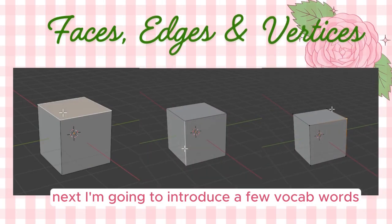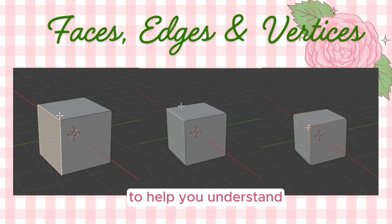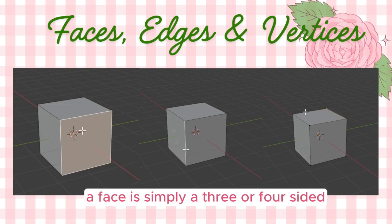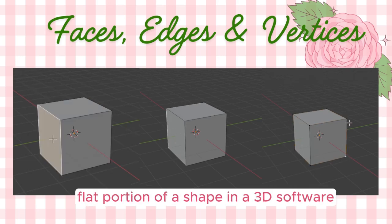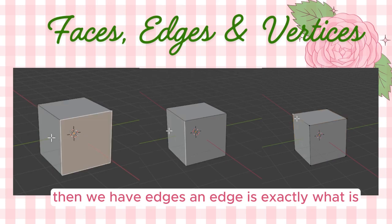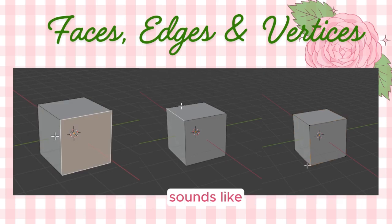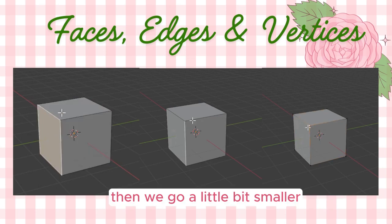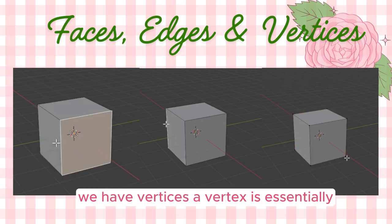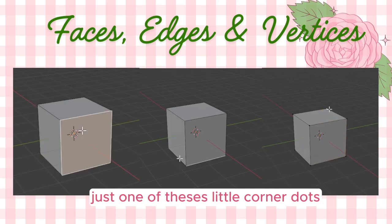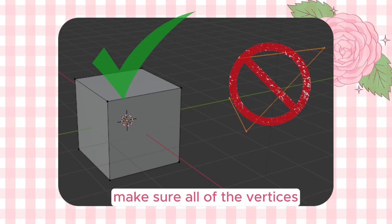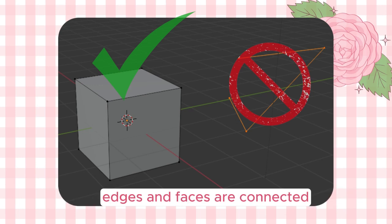Next, a few vocab words to help you understand the software. First, we have faces — a face is simply a three or four-sided flat portion of a shape in 3D software. Then we have edges, which are the lines connecting any of the faces together. Going a little bit smaller, we have vertices — a vertex is essentially just one of those little corner dots. To make your 3D model best for exporting, make sure all vertices, edges, and faces are connected to something else with no lonely stragglers.